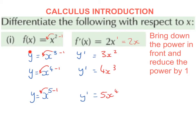In our next example we have y equals x cubed. So again we're going to bring down the power in front, so we end up with 3x, and we're going to reduce the power by 1, so 3 take away 1 is 2. So the derivative of x cubed is going to be 3x squared.